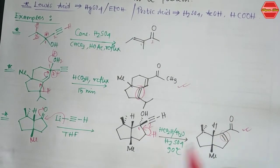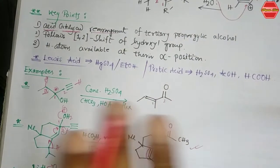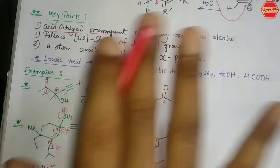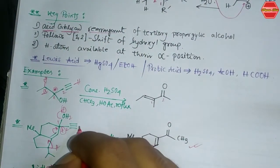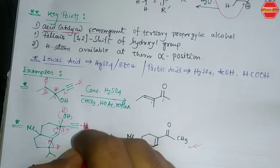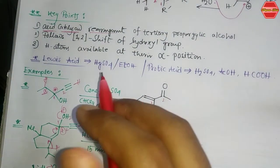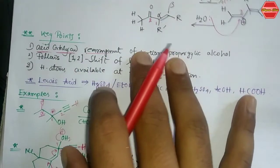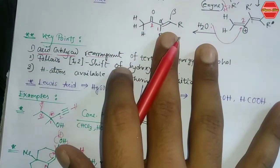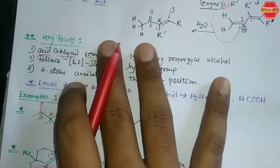To differentiate Rupe from Meyer-Schuster rearrangement: in the Rupe rearrangement the alpha hydrogen is available and the terminal alkyne undergoes the reaction via a 1,2-shift, whereas in Meyer-Schuster it is a 1,3-shift with no requirement for an alpha hydrogen.